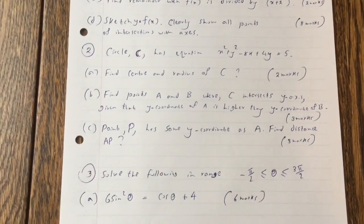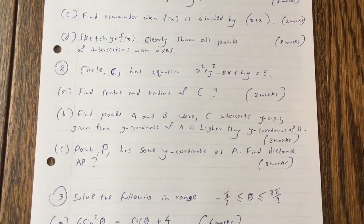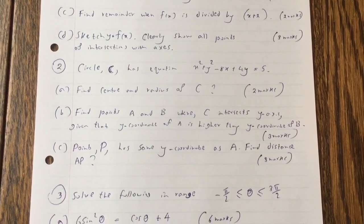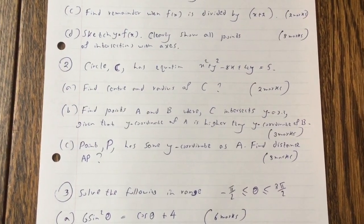Question 2. Circle C has equation x squared plus y squared minus 8x plus 4y equals 5. Find centre and radius of C.